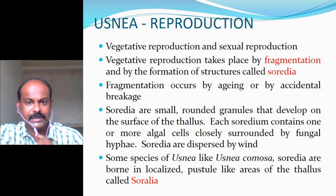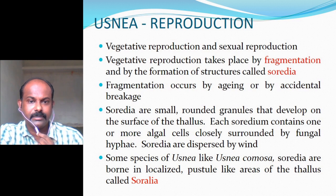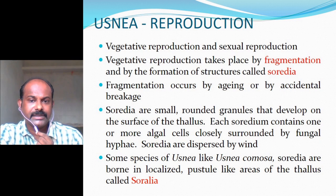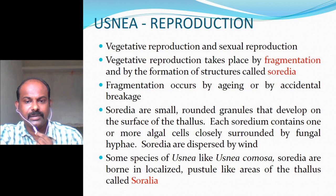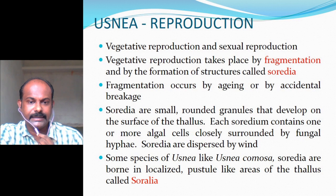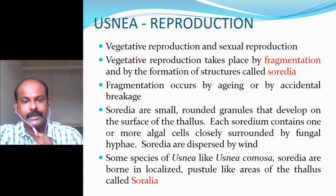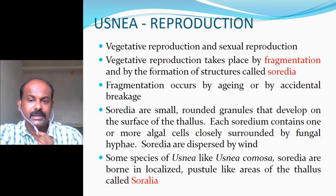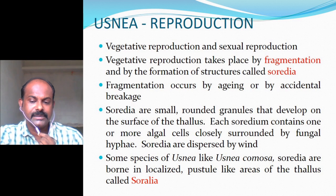Vegetative and sexual reproduction are seen in Usnea. Vegetative reproduction takes place by fragmentation and by formation of soredia. Fragmentation occurs by aging or by accidental breakage. Soredia are small rounded granules that develop on the surface of the thallus, each containing one or more algal cells closely surrounded by fungal hyphae, and are dispersed by wind. In some species like Usnea comosa, soredia are borne in localized pustule-like areas of the thallus called soralia.